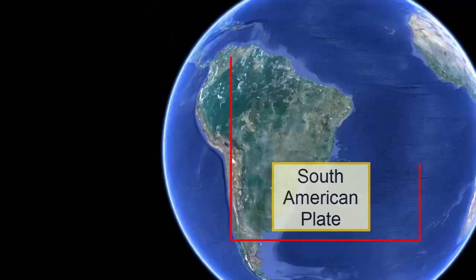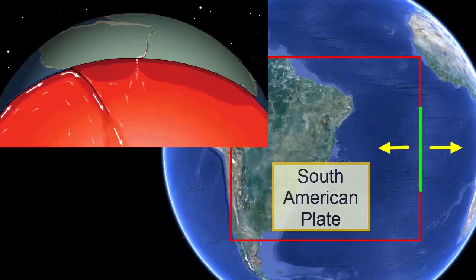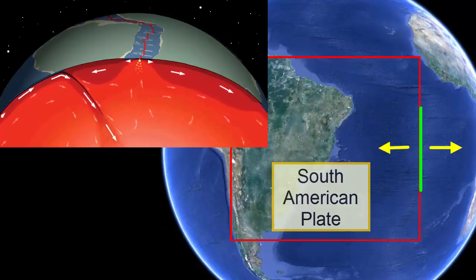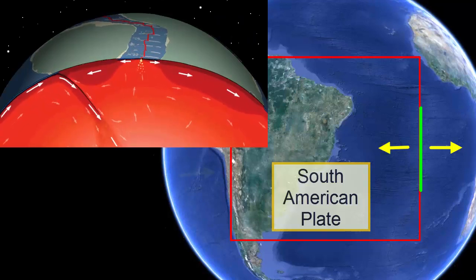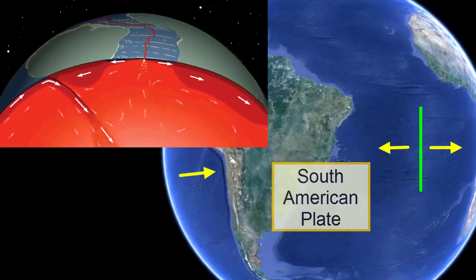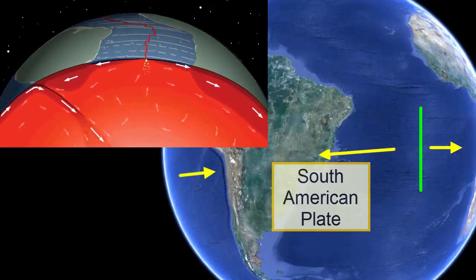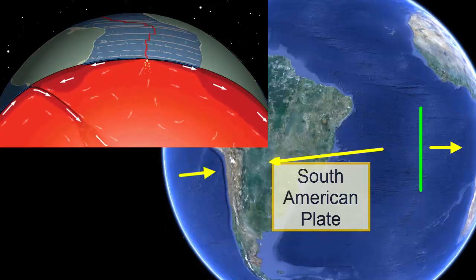South America is growing through volcanism and terrain accretion along its western margin. What about its eastern margin? That side is part of the same plate as the nearby ocean. The entire unit is being pushed away from the seafloor spreading center that marks the center of the Atlantic Ocean. That's why the subduction zone on the western margin even exists — the seafloor spreading in the Atlantic is causing the collision on the western margin.